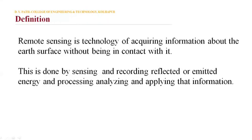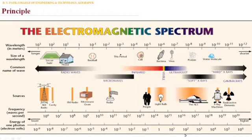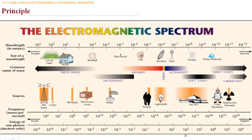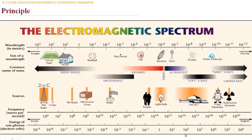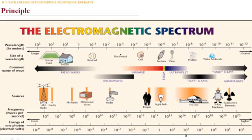Remote sensing involves the use of electromagnetic energy. In the PPT you can see the electromagnetic spectrum, which is a form of energy that moves at the velocity of light.